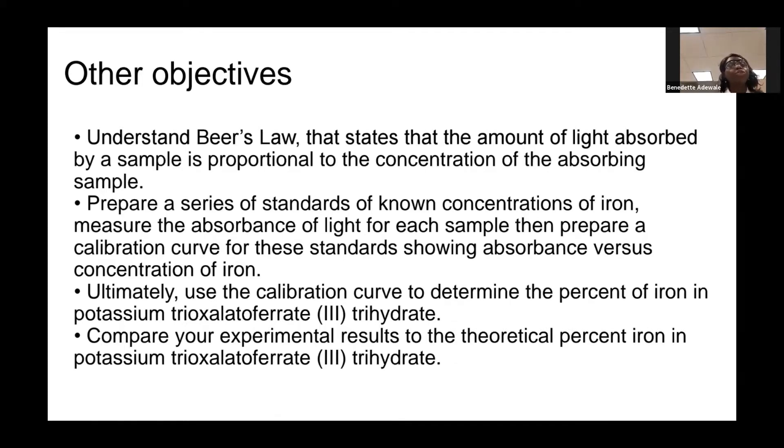In addition, you are going to prepare a series of standards of known concentrations of iron, measure the absorbance of light for each sample, then prepare a calibration curve showing absorbance versus concentration of iron. Ultimately, you are going to use the calibration curve to determine the percent of iron in potassium trioxalato ferrite trihydrate, then compare your experimental results to the theoretical percent iron.